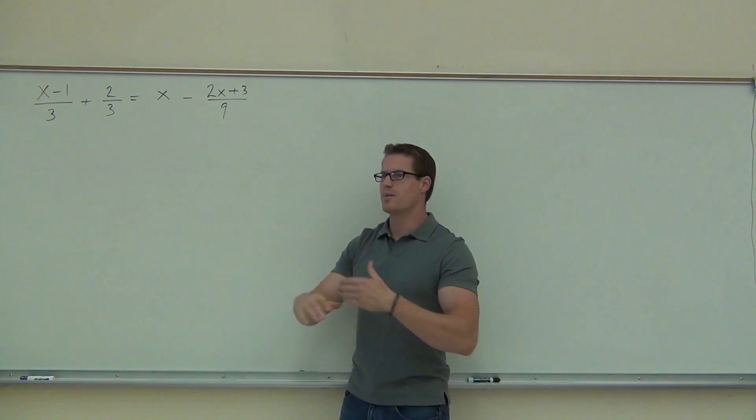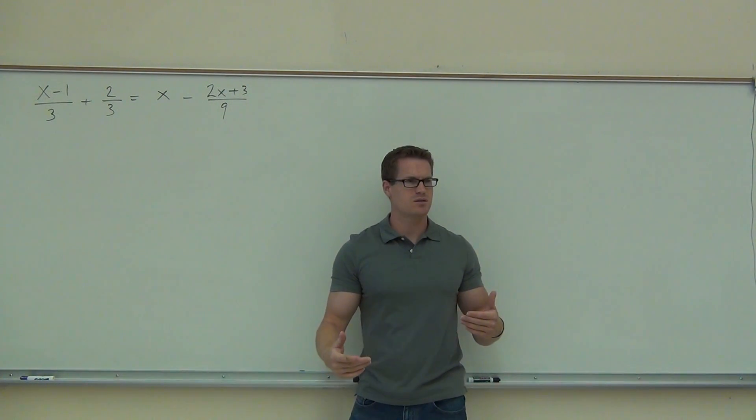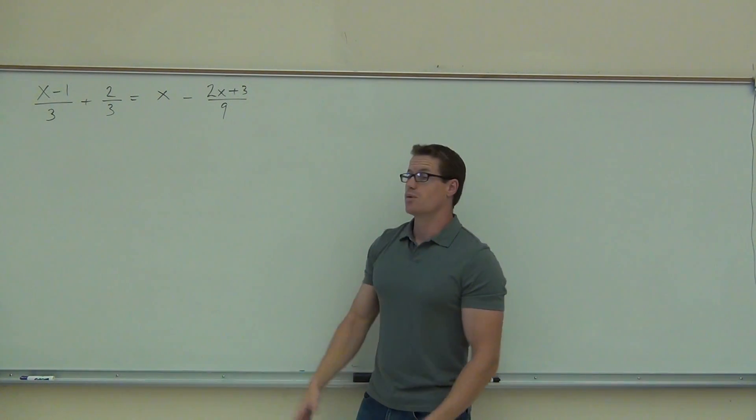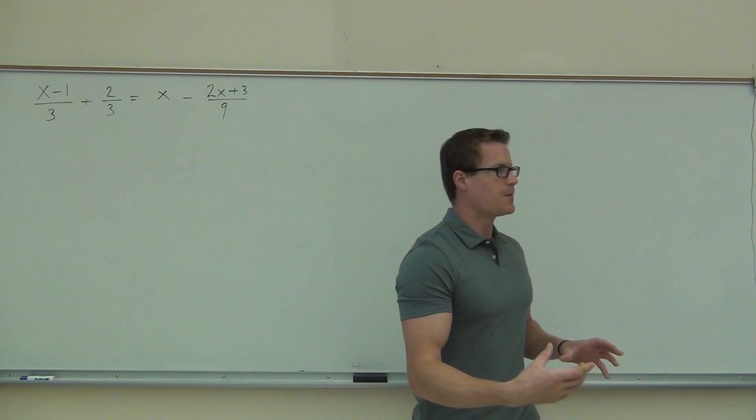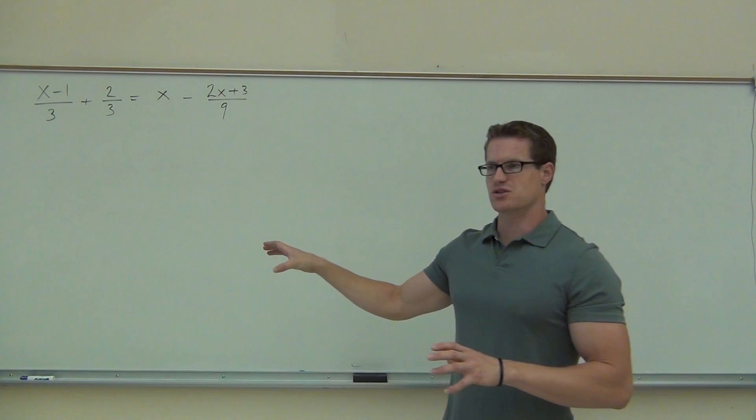If we don't have an equal sign, all bets are off. We can't do this. Did that make sense to you? Okay. So, now we did this earlier with some simpler looking problems. But what's the first step in getting rid of these fractions? What do we look for right at the back?